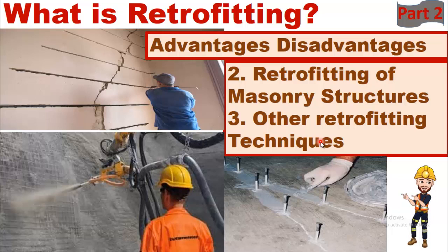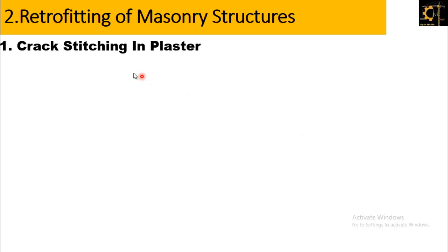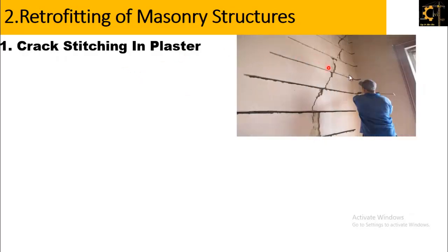Let's discuss the other two types of retrofitting. The first one is retrofitting of masonry structures. It includes crack stitching in plaster. As you can see here, a crack has appeared in the wall and stitching is being done with epoxy or melted rubber so that the crack does not expand. This is the retrofitting technique in which cracks are stitched.